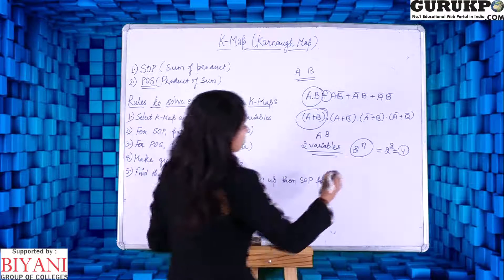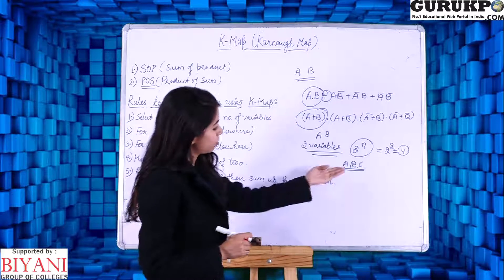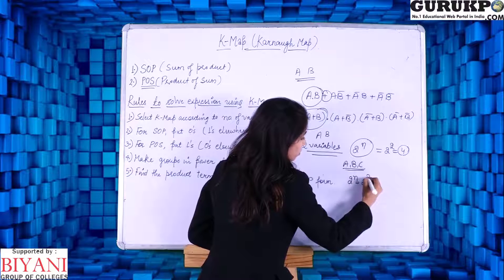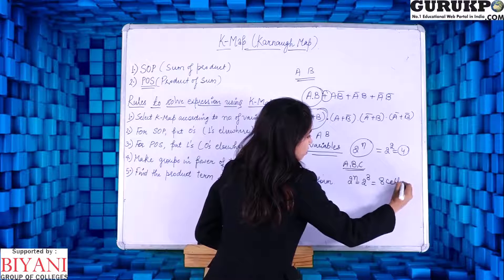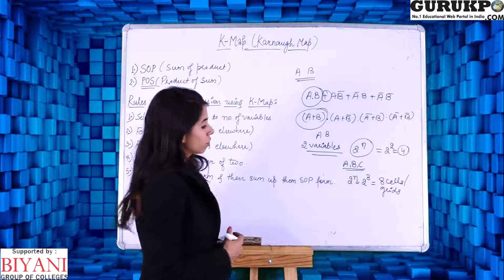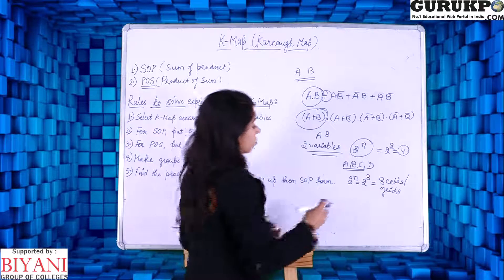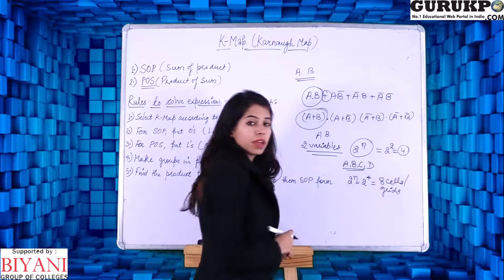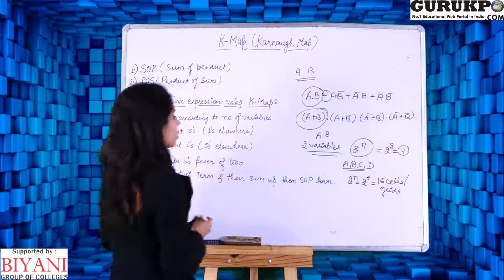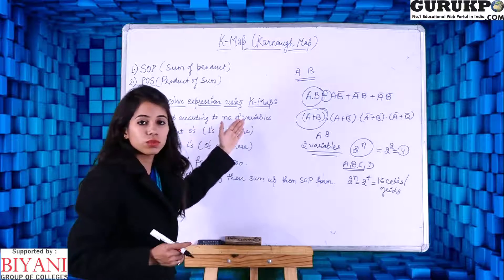For three variables A, B, and C, we have 2 to the power 3 equal to 8 cells or grids. For four variables A, B, C, and D, the formula gives 2 to the power 4, which equals 16 cells or grids. So the first rule is to determine the KMAP size according to the number of variables.